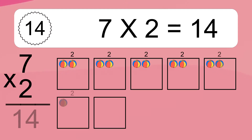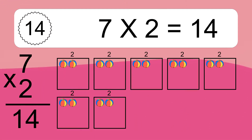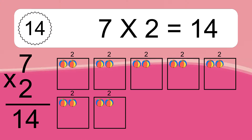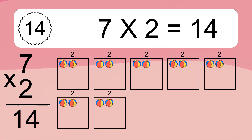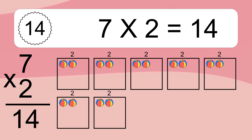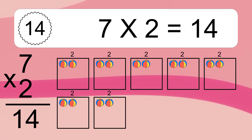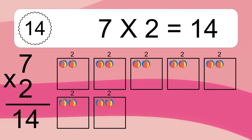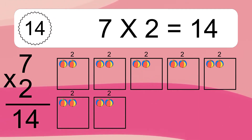7 times 2 equals 14. We have 7 boxes, and each box has 2 colorful balls inside. If you count all the balls in all the boxes together, you will have 7 times 2 balls. This equals 14 balls.